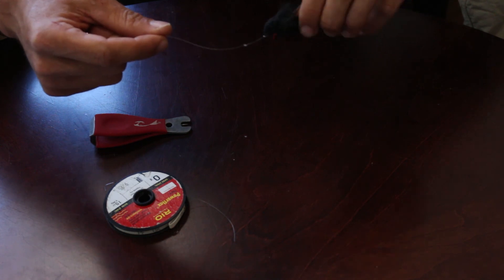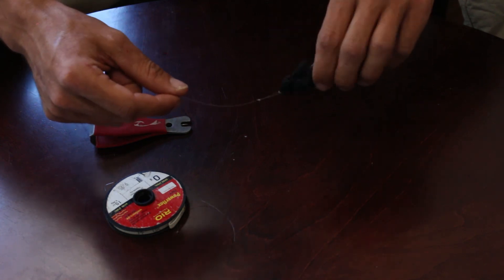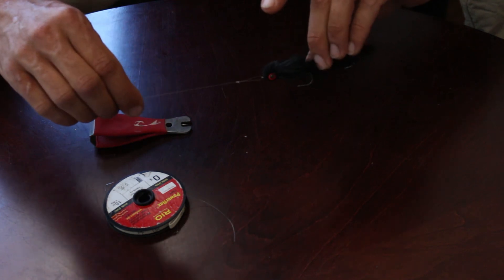This is the non-slip knot. I think it's also referred to as a Kreh knot, if I'm not mistaken. This is Ralph with Gone Fishing Colorado. Thank you very much for watching.